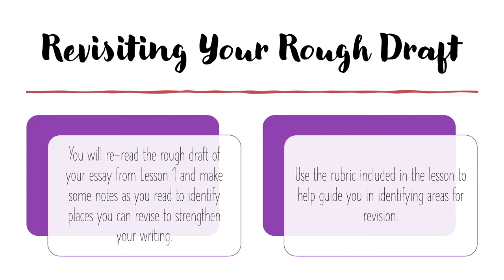You will reread the rough draft of your essay from lesson one and make some notes as you read to identify places you can revise and strengthen your writing. You'll use the rubric included in the lesson to help guide you in identifying areas for revision. On the next slides, we'll take a close look at the rubric so that you clearly understand the expectations for a high-scoring essay. You may want to take some notes so that you can refer to them when you get to lesson two later this week.